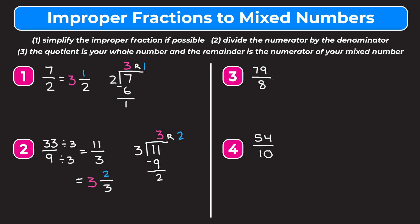For example three we have 79 over eight, which we cannot simplify, so we go straight to division: 79 divided by eight. Eight cannot go into seven, but it can go into 79 nine times. Eight times nine is 72, so we put 72 down and subtract. 79 minus 72 gives us a remainder of seven. We can write 79 eighths as a mixed number: the whole number part is our quotient of nine, the numerator is our remainder of seven, and the denominator stays as eight — so nine and seven eighths.